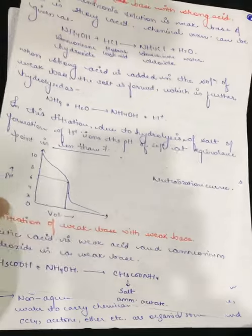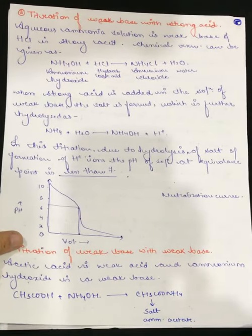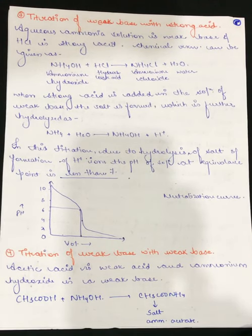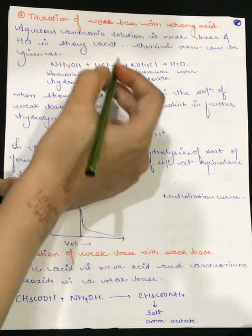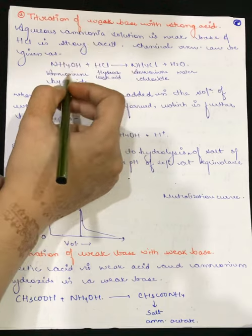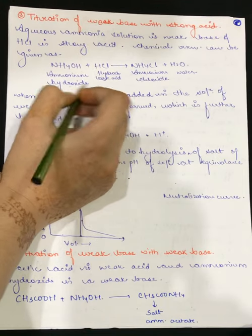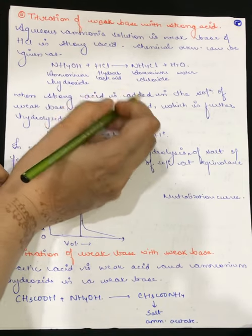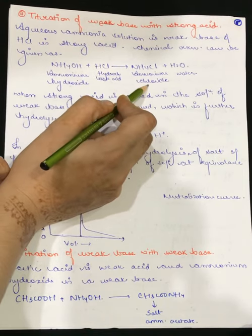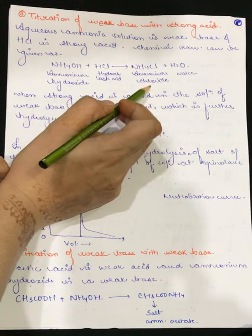Now we have titration of weak base with strong acid. We use aqueous ammonia as the weak base and hydrochloric acid as the strong acid. When ammonium hydroxide reacts with hydrochloric acid, we obtain ammonium chloride as the salt.